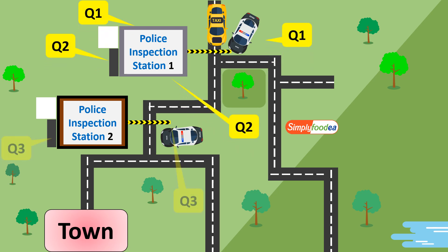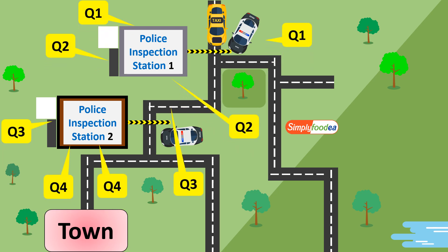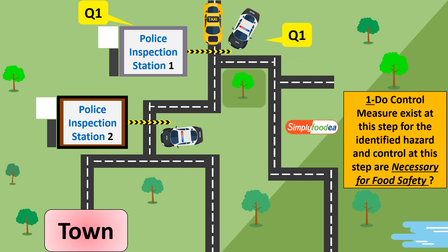Please prepare yourself with a pen and paper and focus on this video. The first question: do control measures exist at this step for the identified hazard, and is control at this step necessary for food safety? The core of the first question is: is this step necessary for food safety? If the answer is no, it will be OPRP, because it's not necessary for food safety.